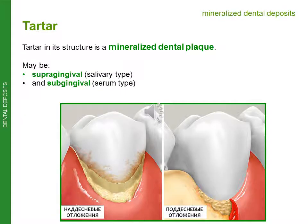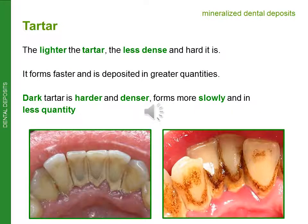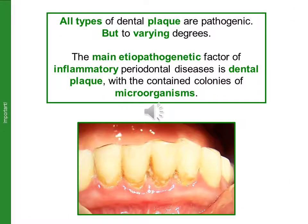Mineralized dental plaque — tartar — can be supra-gingival (salivary type) and sub-gingival (serum type). Lighter tartar is less dense and hard; it forms faster and is deposited in greater quantities. Dark tartar is harder and denser, forms more slowly and in lesser quantity. All types of dental plaque are pathogenic, but to varying degrees.